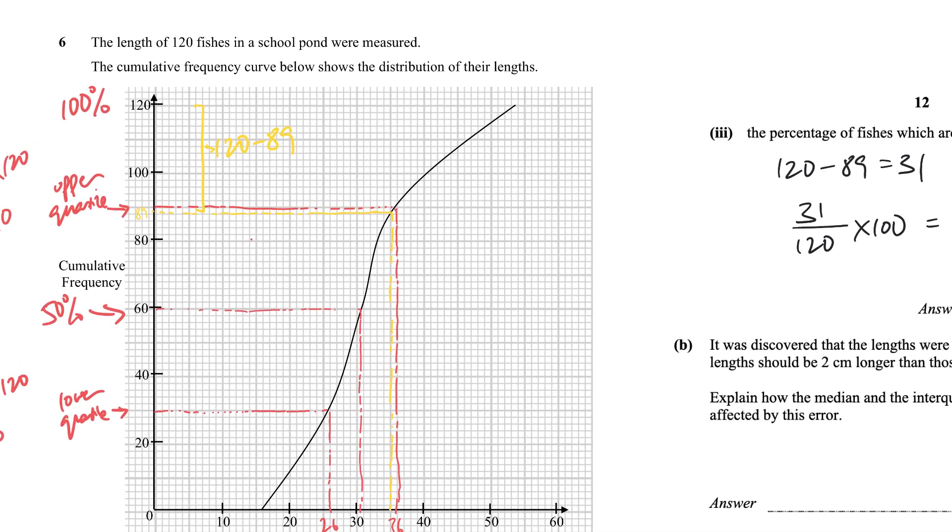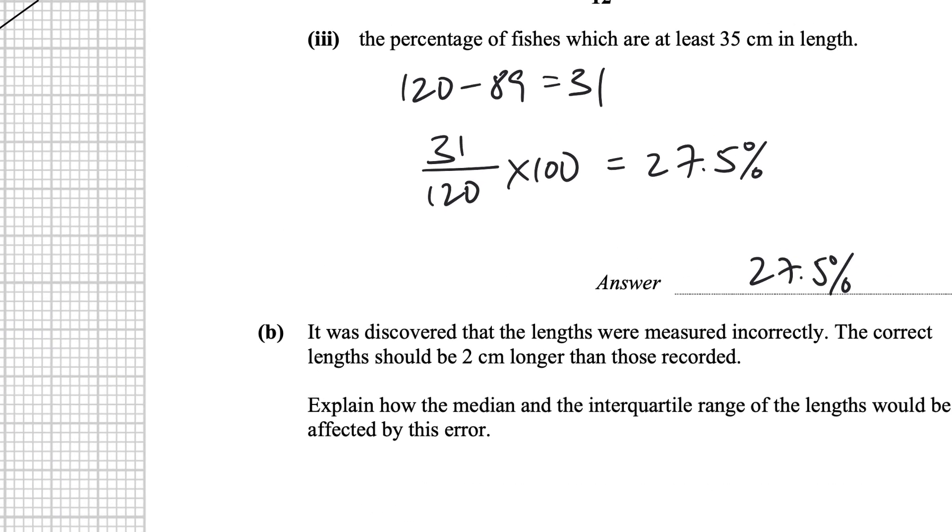And from 89 all the way to 120, how many fishes are there? I subtract, and I see that it's 31. So 31 fishes are at least 35 cm in length, represented as a percentage of the total number of fishes.